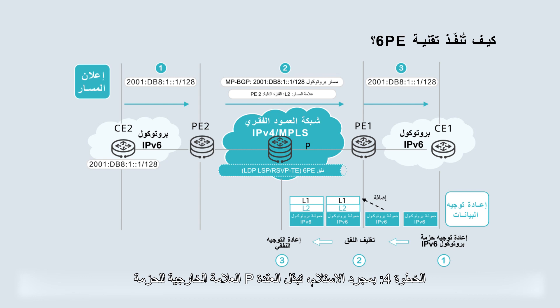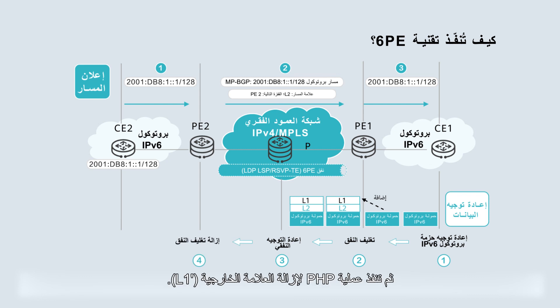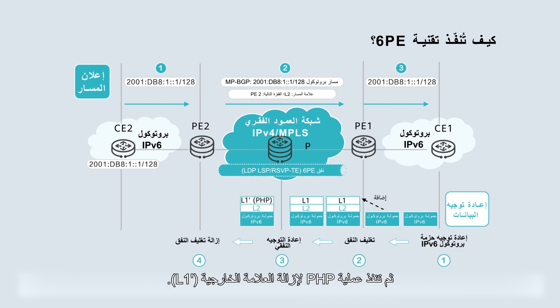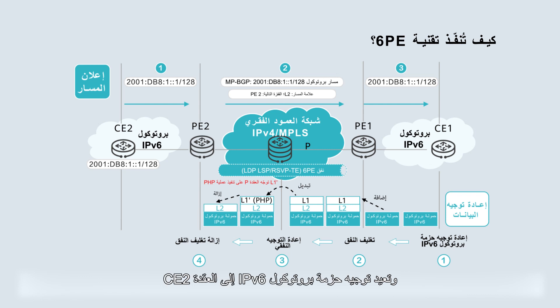Step 4: upon receipt, the P swaps the outer label of the packet, and then performs PHP to remove outer label L1. Step 5: after PE2 receives the packet, it removes the L2 label and forwards the IPv6 packet to CE2 based on the destination address of the packet.